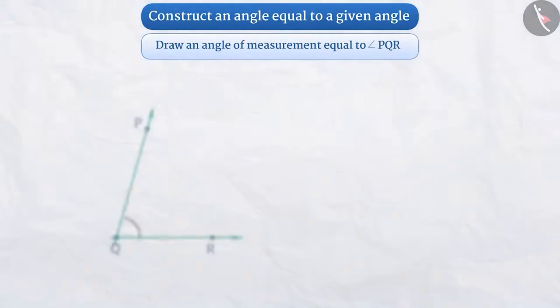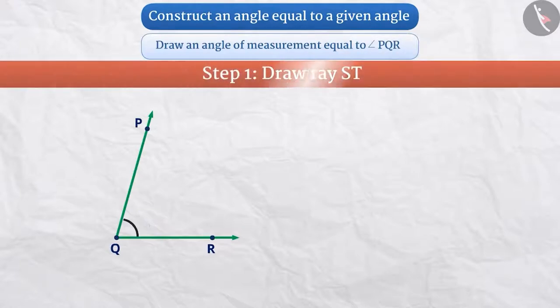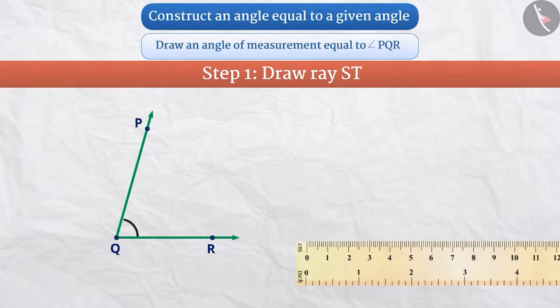Suppose we are given angle PQR whose measurement we do not know. We have to make an angle of measurement equal to this angle. Step 1: To draw the angle, first draw ray ST.